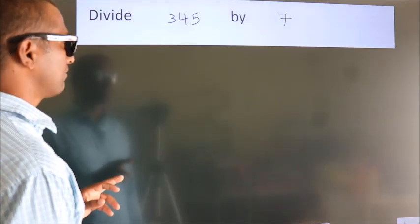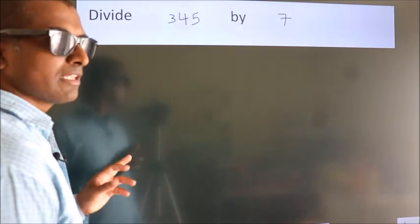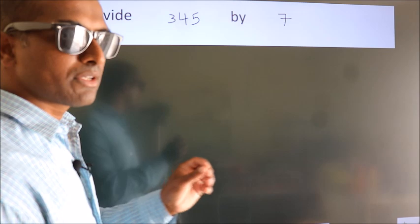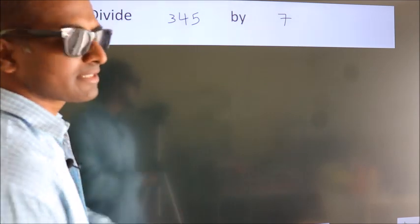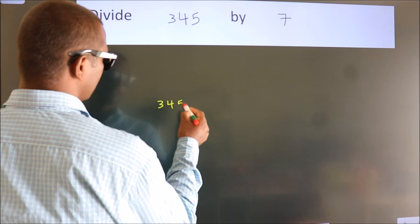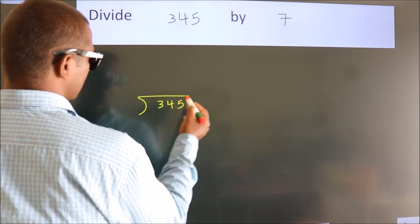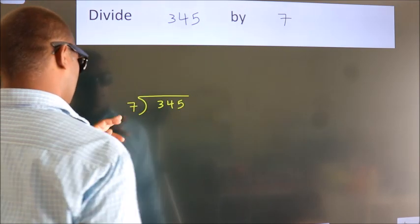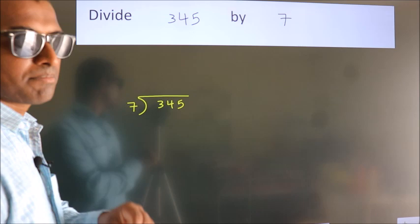Divide 345 by 7. To do this division, we should frame it in this way: 345 here, 7 here. This is your step 1.